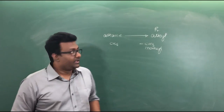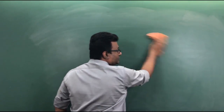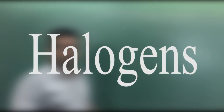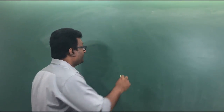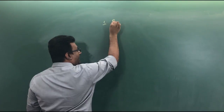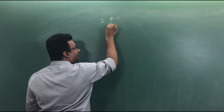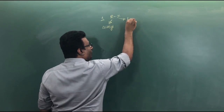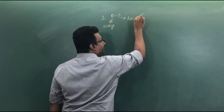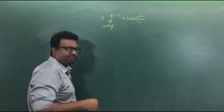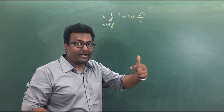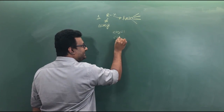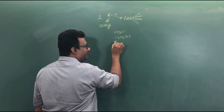The first family of functional groups we are learning is halogens. The first one is R-X, where R is the alkyl group and X is the halo group — meaning it can be fluorine, chlorine, bromine, or iodine: fluoro, chloro, bromo, and iodo. Examples include CH3Cl, C2H5Br, and C3H7Cl.